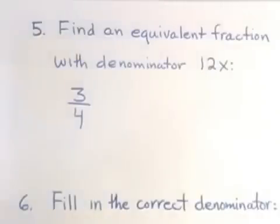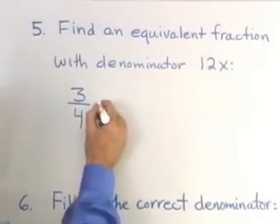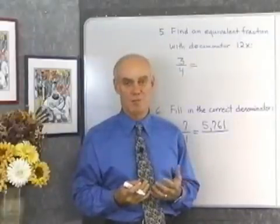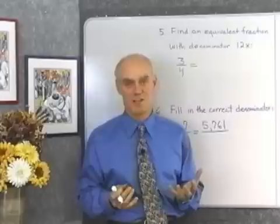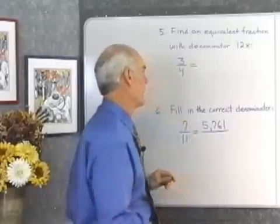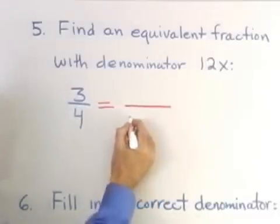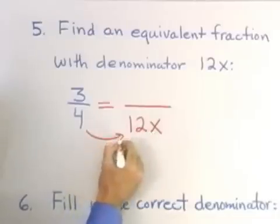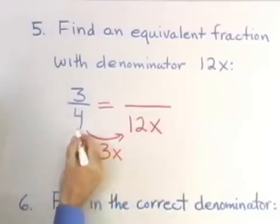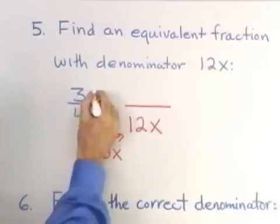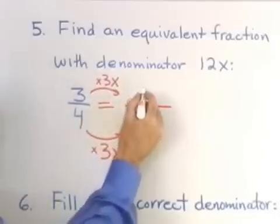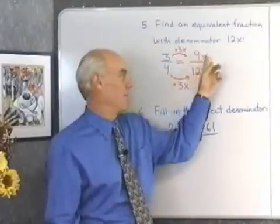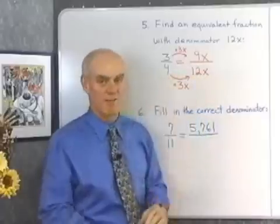Find an equivalent fraction with a denominator of 12x. Here I have 3/4 and I want to rewrite it with denominator 12x. To go from 4 to 12x using multiplication, I have to multiply by 3x, since 3x times 4 gives me 12x. If I do that to the denominator, I have to do the same thing to the numerator, multiplying by 3x, which produces 9x in the numerator. So the fraction 9x over 12x is equivalent to 3/4 for any value of x other than 0.